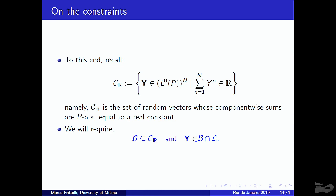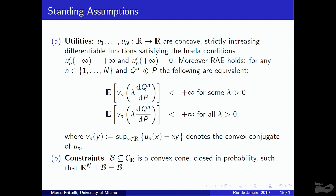The set Cᵣ consists of random vectors whose components sum to a constant; the feasible allocation Y must belong to a subset satisfying integrability conditions. Standard assumptions apply to the utility functions, including the reasonable asymptotic elasticity condition introduced by Schachermayer. The convex conjugate Vₙ of the utility function Uₙ is also used.